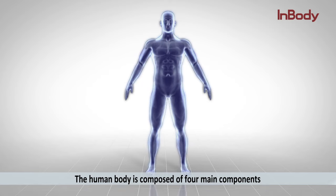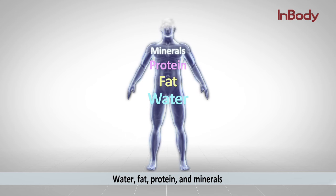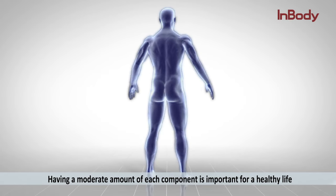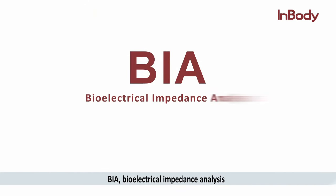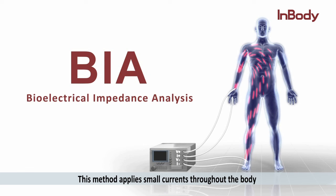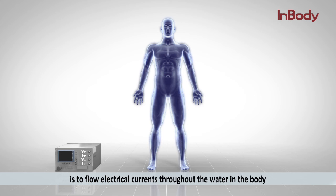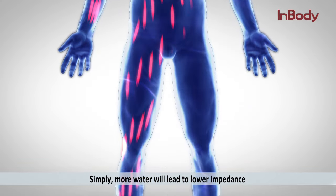The human body is composed of four main components: water, fat, protein, and minerals. Having a moderate amount of each component is important for a healthy life. BIA — bioelectrical impedance analysis — is considered one of the most practical methods to assess body composition. This method applies small currents throughout the body and measures the voltage to get a value called resistance, also known as impedance. The principle behind BIA is to flow electrical currents throughout the water in the body and measure the amount of resistance the current encounters. Simply put, more water will lead to lower impedance.